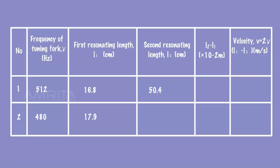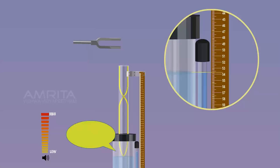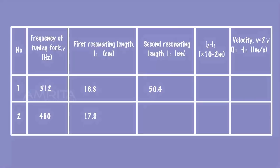Vibrate the tuning fork again and place it over the tube. Raise the tube further to a height approximately equal to 3 times the previous height L1. Stop raising the tube when the maximum sound is heard and note the length of air column at that position. Record the second resonating length L2.